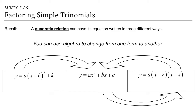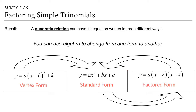We're talking about quadratic relations again, and what we know already is that you can write the equation for a quadratic relation in three different ways: vertex form, standard form, and factored form. Each of these different ways of writing the equation tells you something different about the graph. The vertex form tells you the coordinates of the vertex, the standard form tells you the y-intercept, and the factored form tells you the x-intercepts.